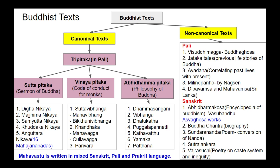The Vinayapitaka is divided into three parts: Suttavibhanga (further divided into Mahavibhanga and Bhikkhuni-vibhanga), Khandhaka (further divided into Mahavagga and Cullavagga), and Parivara. The Abhidhammapitaka is divided into seven parts: Dhammasangani, Vibhanga, Dhatukatha, Puggalapannatti, Kathavattu, Yamaka, and Patthana.